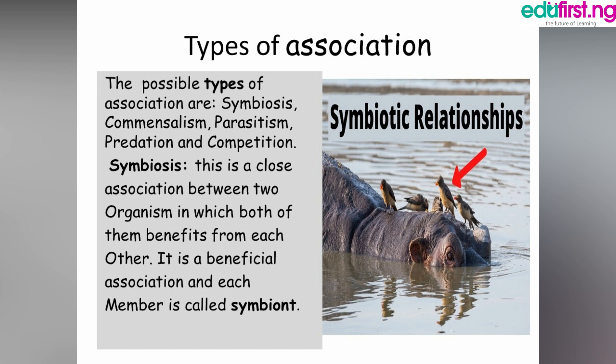What is a symbiosis relationship? This is a close relationship between two organisms in which both of them benefit from each other. It is a beneficial association and each member is called a symbiont. Organism A benefits from organism B and organism B benefits from organism A — that is a symbiosis relationship where both parties benefit from one another.